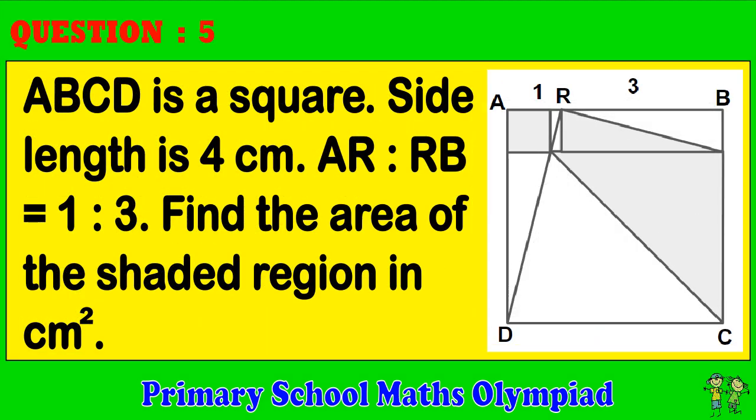Question 5: ABCD is a square. Side length is 4 centimeters. AR to RB equals 1 to 3. Find the area of the shaded region in centimeters squared.